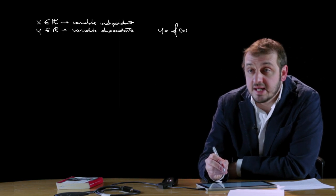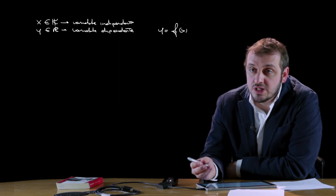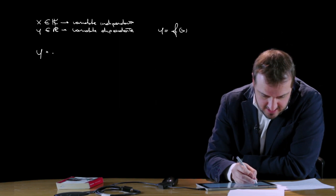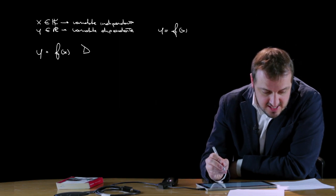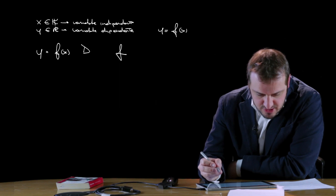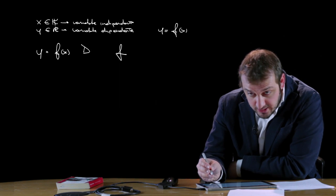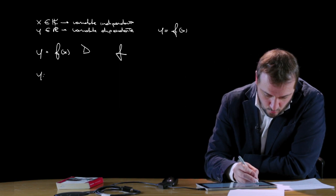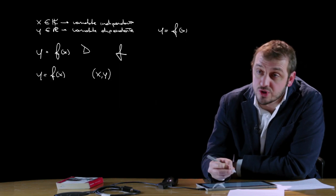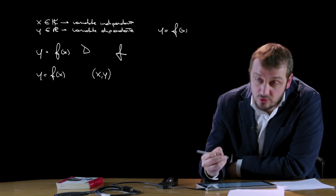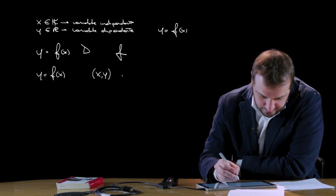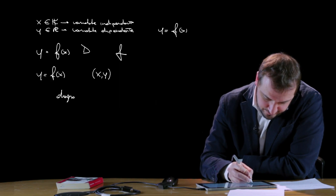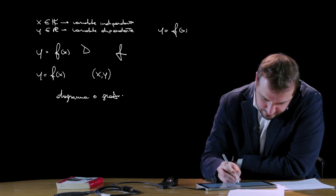La nostra funzione lega in questo modo la x alla y. È possibile definire per la funzione reale di variabile reale quella che si chiama definizione di Dirichlet. Questa ci dice che una variabile reale y si dice funzione di una variabile reale x in un dominio sottoinsieme dei numeri reali, se esiste una legge f di natura qualsiasi che faccia corrispondere ad un qualsiasi x del dominio uno ed un solo valore della y. Di conseguenza, data una funzione y = f(x), tutte le coppie (x, y) costituiscono coppie ordinate di punti e possono essere rappresentate in un piano cartesiano.